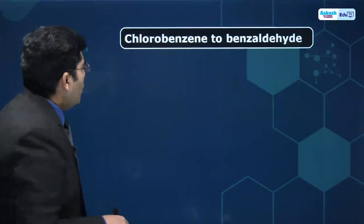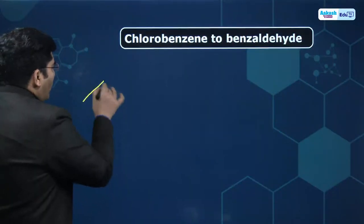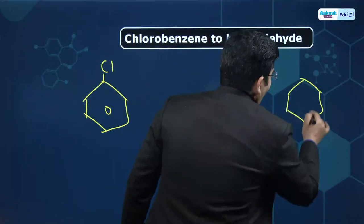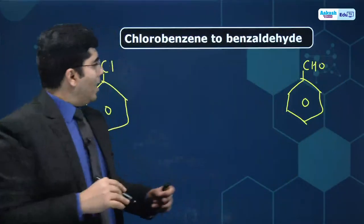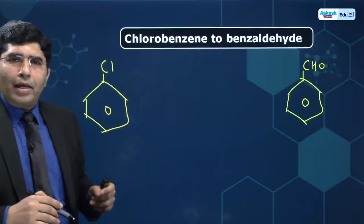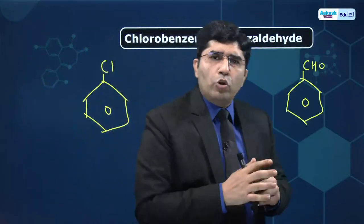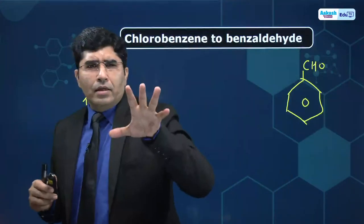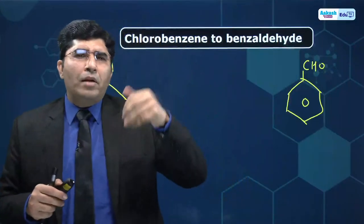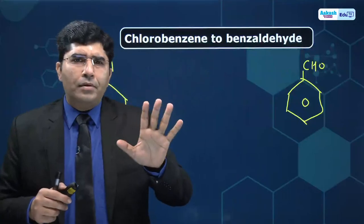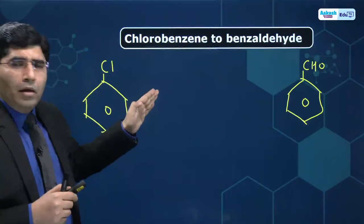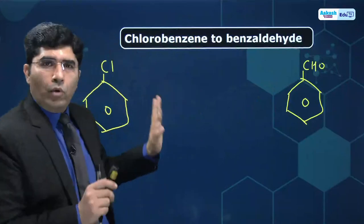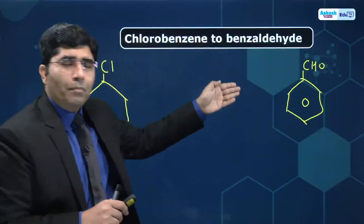Now we are going to do chlorobenzene to benzaldehyde. If I have to do this, what do I do? Here we have chlorobenzene, and we need benzaldehyde — that means a CHO group, one extra carbon has been added. When I think about how to make benzaldehyde, I have to think backwards: where do I need to reach, and then how do I get there from chlorobenzene.